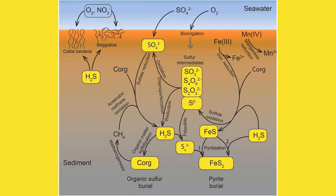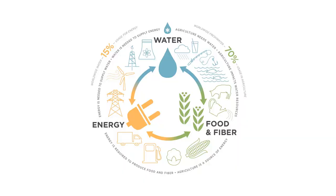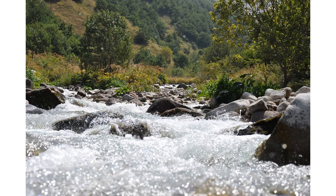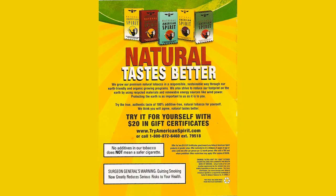These cycles involve the movement of matter between living organisms, the atmosphere, and the earth's crust. The video shows diagrams of the different biogeochemical cycles, emphasizing the importance of each cycle in maintaining the balance of nutrients in ecosystems. Understanding the flow of energy and matter in ecosystems is crucial for studying ecology, as it helps us understand how living organisms interact with each other and their environment.